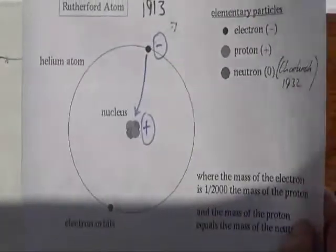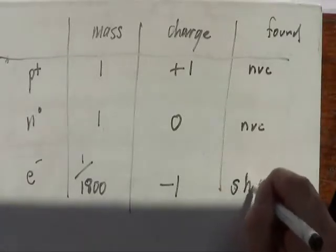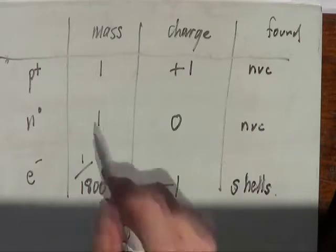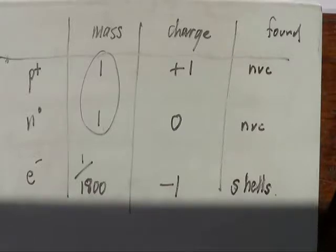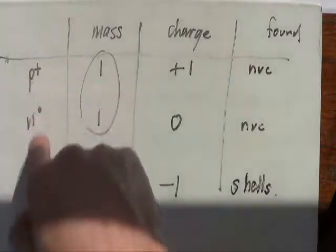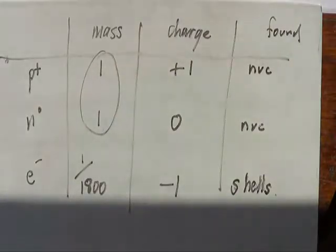Pretty much all the mass of an atom is contained within the nucleus. So when we look at mass numbers, you'll see that the mass number on a periodic table tells us the number of protons and neutrons — that's no surprise because the mass really is the protons and neutrons. The electrons are insignificant in terms of mass, so they are not included in the mass number.